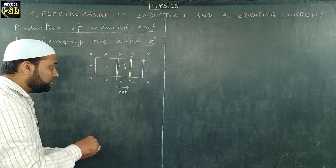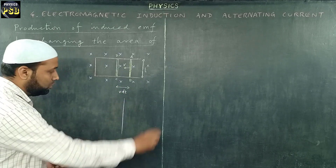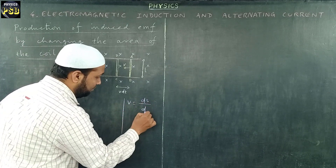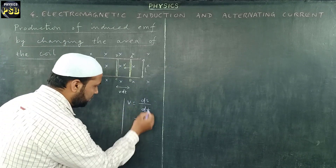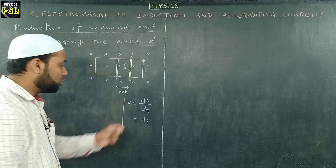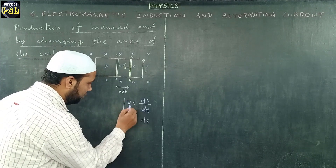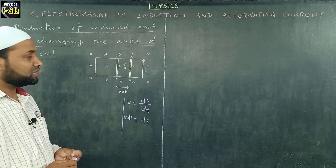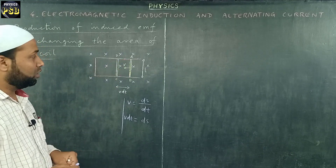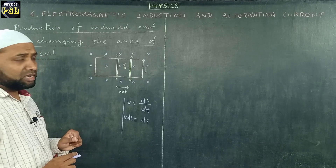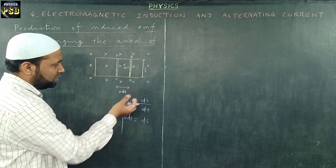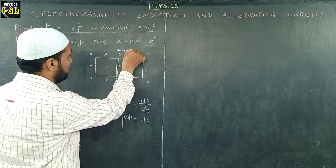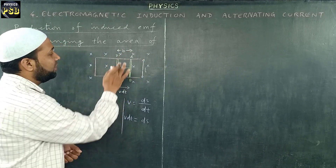Now, how do we get this? We know velocity is nothing but displacement covered in a given time. From this, the displacement ds is obtained by cross multiplication: if you multiply dt with V, we obtain ds. This is how V·dt gives us the displacement covered by this movable metal rod. From the diagram, it is clear that this displacement gives the breadth of the rectangular area ABCD.